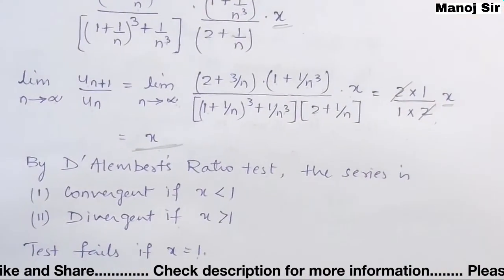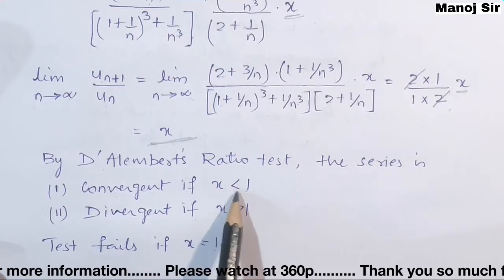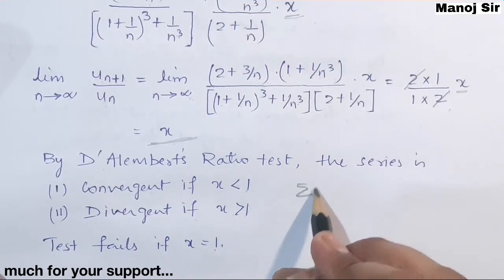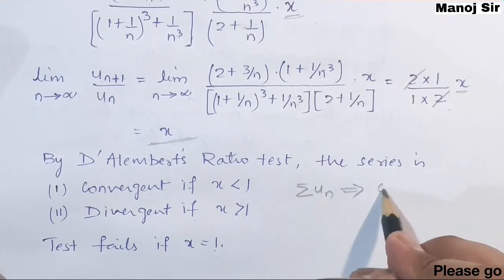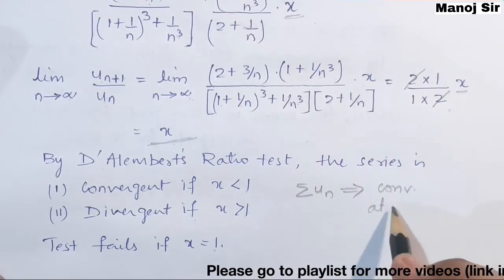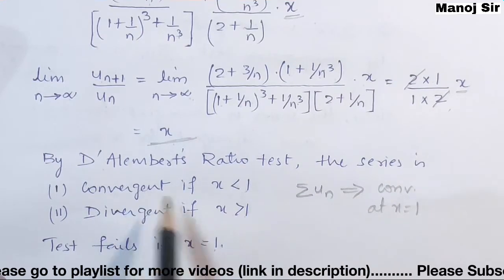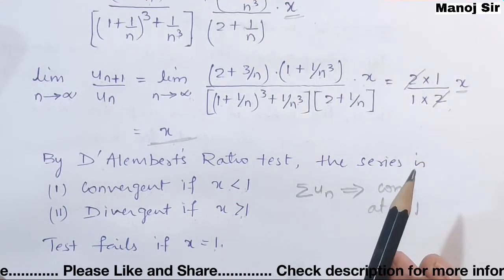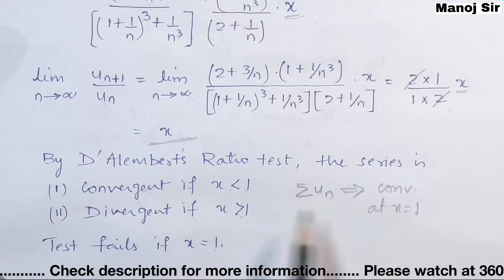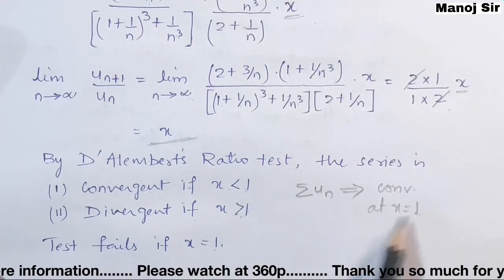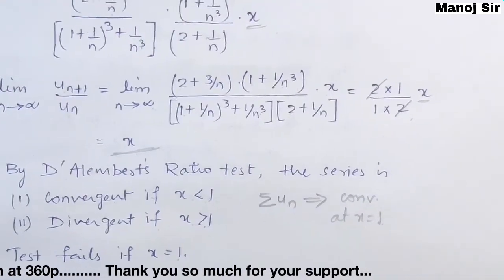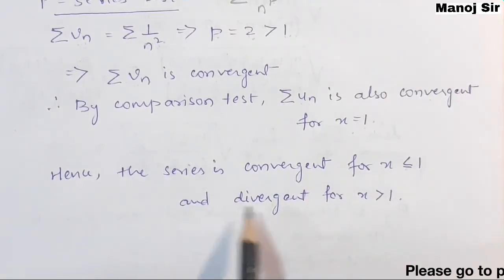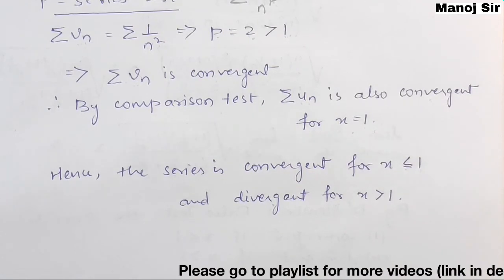From D'Alembert's ratio test, the series is convergent when x < 1 and divergent when x > 1. From the comparison test, the series is convergent at x = 1. Therefore, the series is convergent for x ≤ 1 (i.e., x less than or equal to 1) and divergent for x > 1. Thank you so much for watching this video.